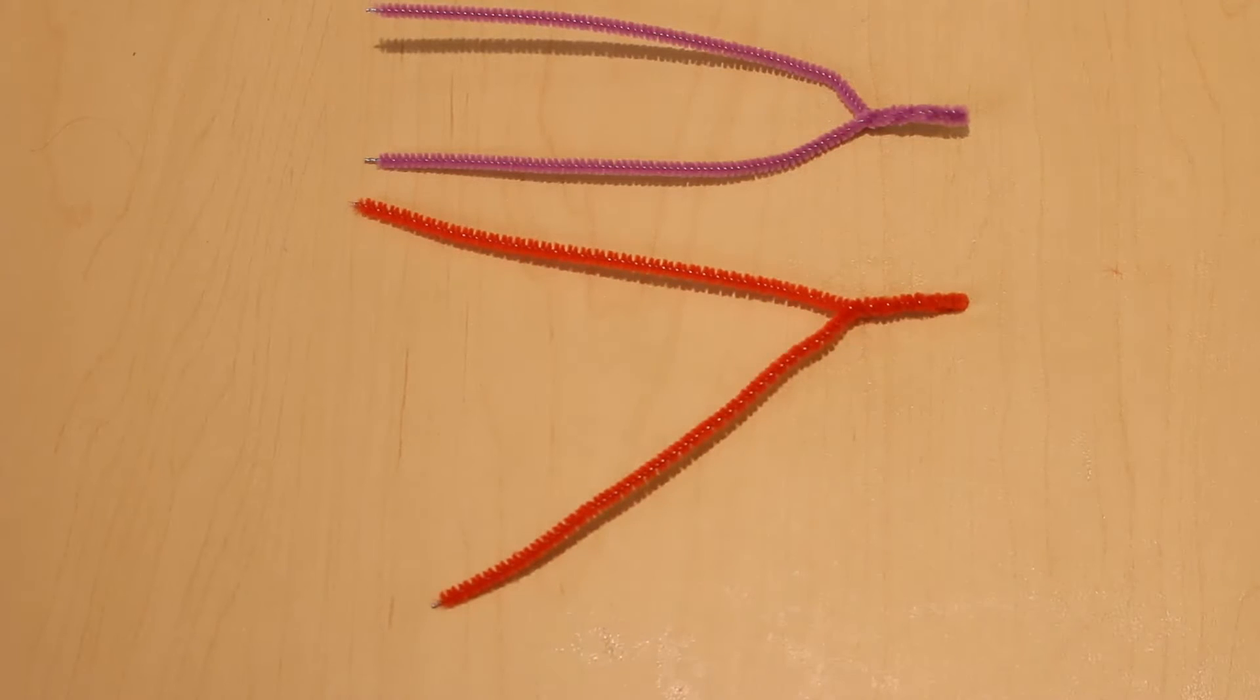Now I'm going to show you how to make it. In order to do this, you're going to need five pipe cleaners preferably of different colors. To start, we're going to take two pipe cleaners and these are going to represent the C5 and C6 roots.